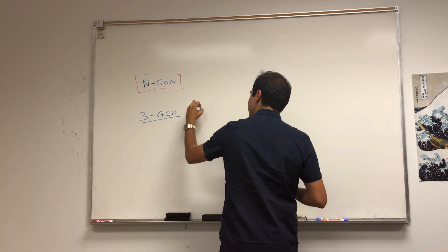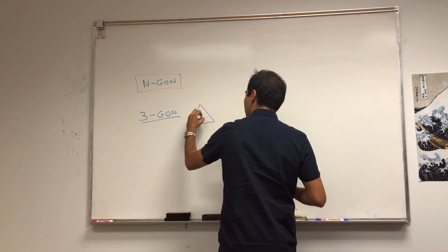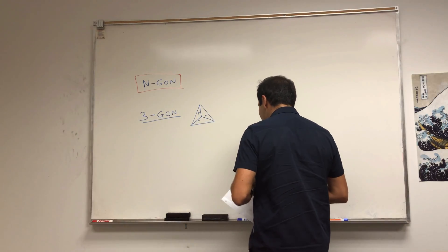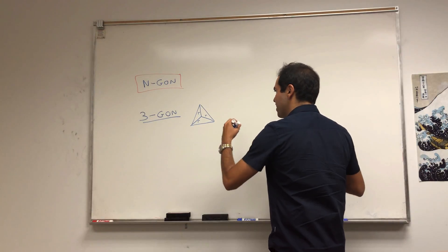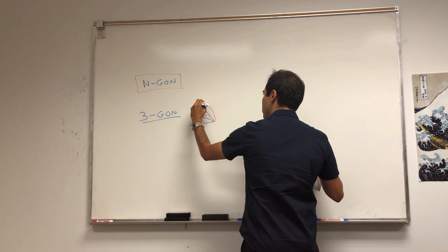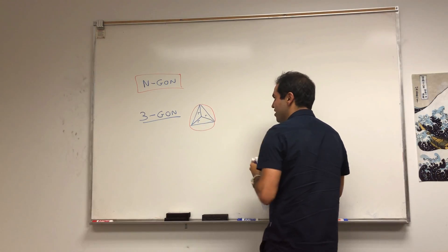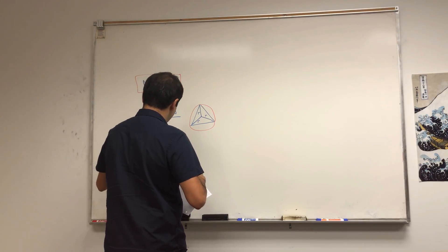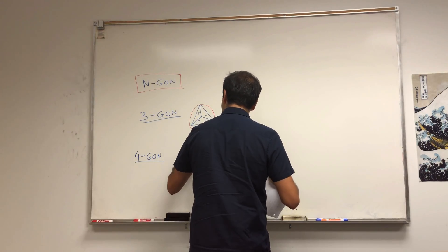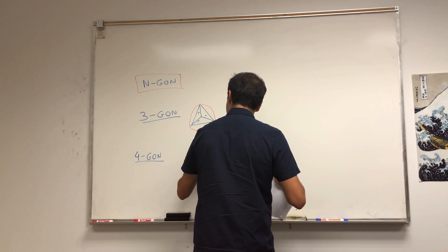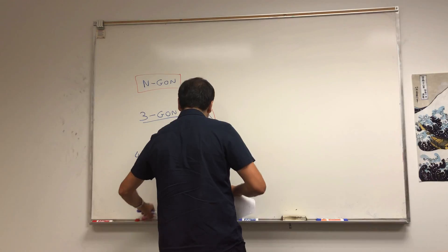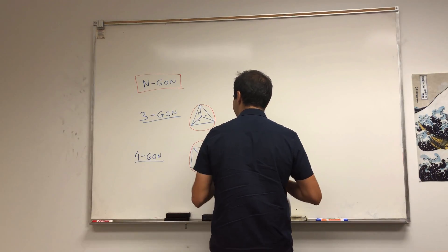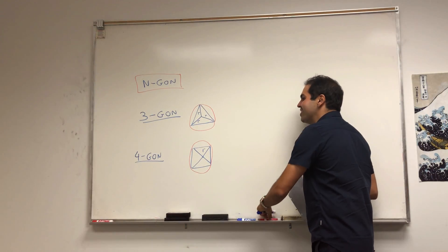It's easiest to explain by a picture. A 3-gon is just an equilateral triangle whose radius is r — or you can think of it as a triangle inscribed inside a circle of radius r. A 4-gon is just a square whose radius is r, meaning half the diagonal is r, also inscribed inside a circle.